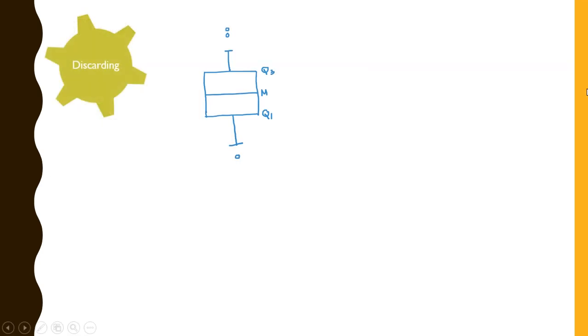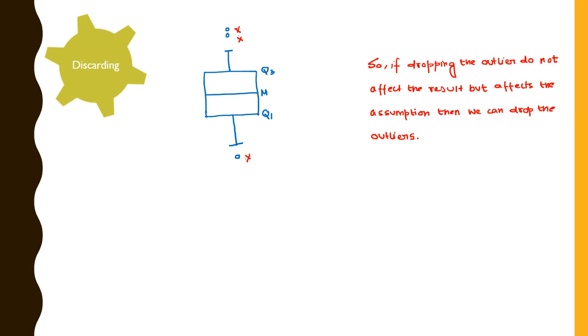Let us take the first one. Suppose that we have a variable and this is the distribution of the variable, and the box plot shows the presence of three outliers. If we can analyze that dropping these outliers is not affecting the result but keeping the outliers in the data set is actually violating the assumptions, then it is better to drop these outliers from the data set. So if dropping the outliers do not affect the result but affects assumption, then we can drop the outliers. However, in most of the cases outlier both affects assumptions and the result, and that calls for using the second method.